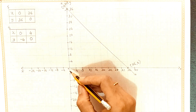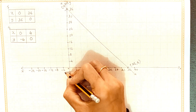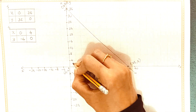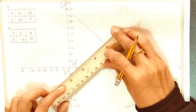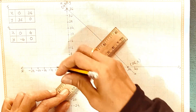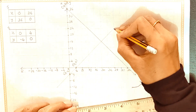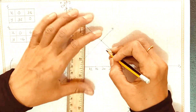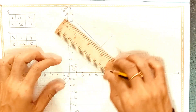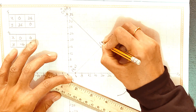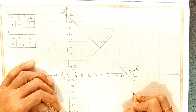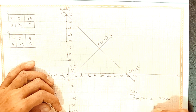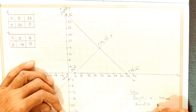For the second equation, when x = 0, y = −4, and when x = 4, y = 0. Join these two points and extend the line. These two lines intersect at the point x = 20 and y = 16. So our solution is: length x = 20 meters and breadth y = 16 meters.